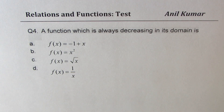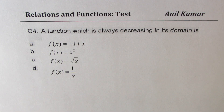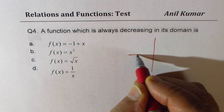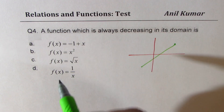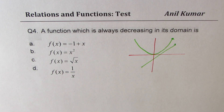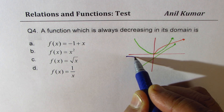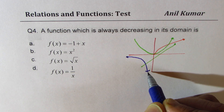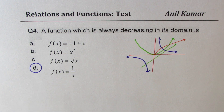Question number four: a function which is always decreasing in its domain. Decreasing means going downward from left to right. The linear function f(x) = -1 + x is increasing. The quadratic x² decreases then increases. The square root function is always increasing. The reciprocal function 1/x is decreasing throughout its entire domain — from -∞ to 0 and then again decreasing. So the reciprocal function is the answer.